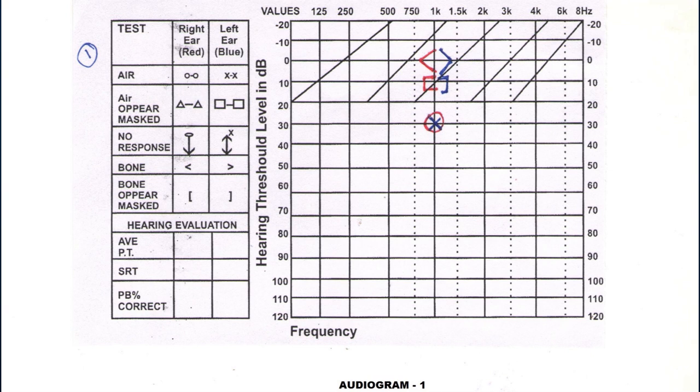We should therefore usually get a small air-bone gap on masked audiograms even if the loss is bilateral symmetrical sensorineural hearing loss.